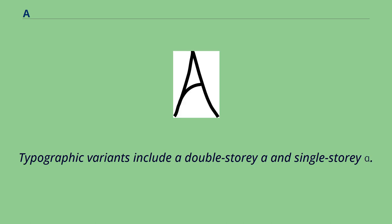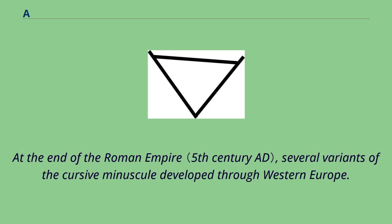Typographic variants include a double-story A and single-story. At the end of the Roman Empire, several variants of the cursive minuscule developed through Western Europe.